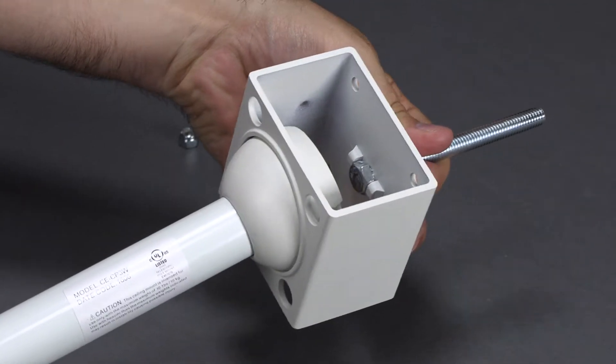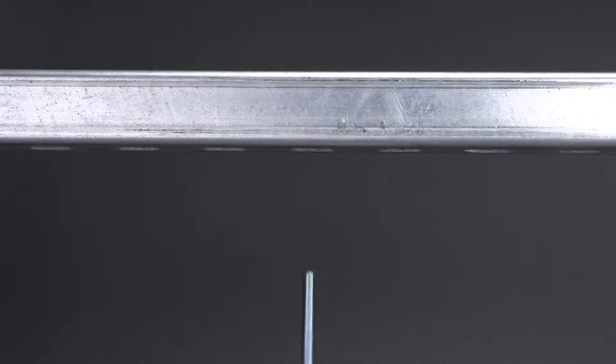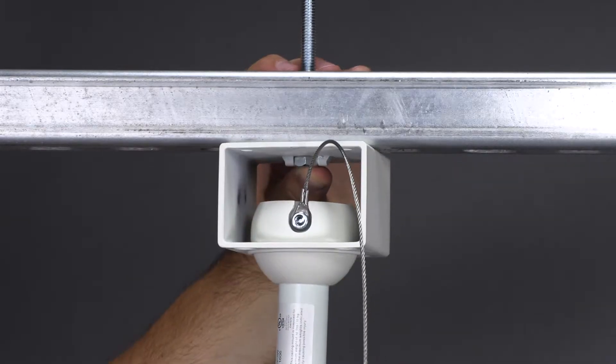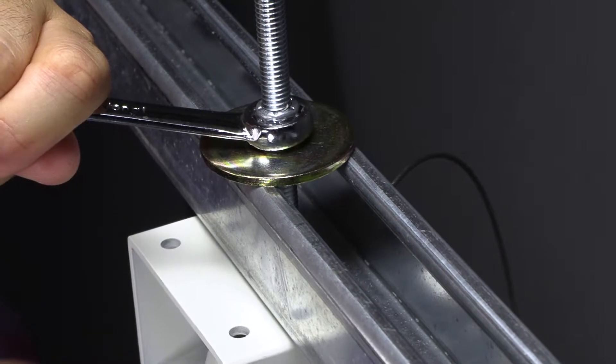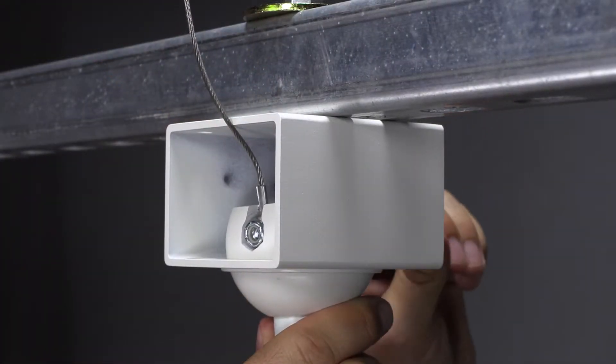Insert the camera pole into the ball and secure with the included bolt and safety cable. Guide the bolt through the ceiling truss structure and secure with the included locking nut. Loop the safety cable around the truss structure and secure to the ball with the lock nut.